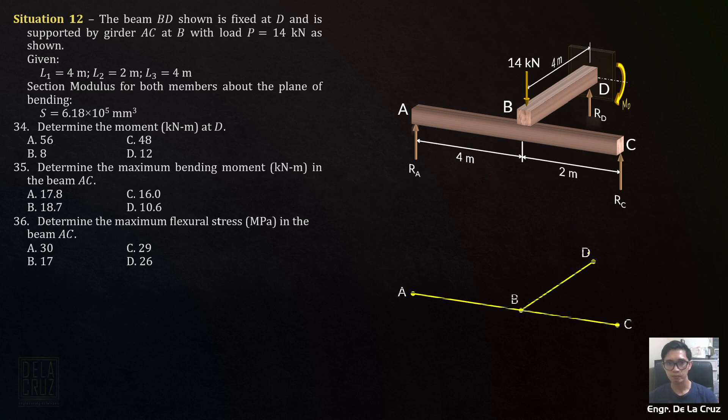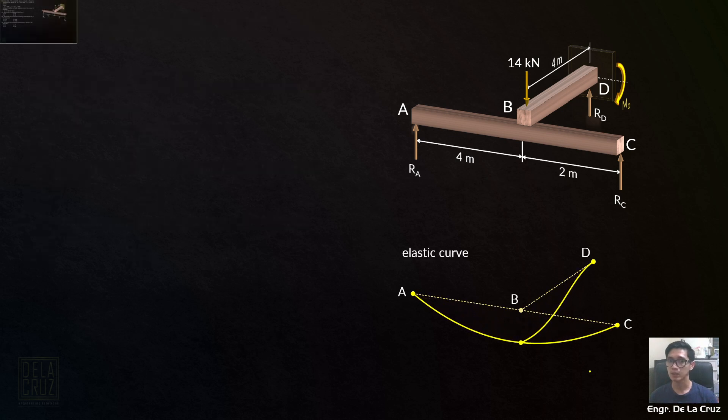Our analysis here is that if we look at the elastic curve, we'll just use straight lines or sticks. Point A, B, C, and point D. After the application of the 14 kN load at point D, this is the elastic curve. So they have a common deflection, deflection at B. The deflection of cantilever BD at point B is delta B, and the deflection of AC at point B is still delta B.